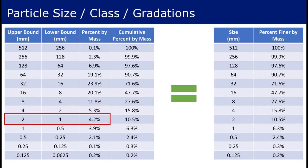So if a particular sample is 4.2 percent very coarse sand and the cumulative percentage of material in this class is 10.5 percent, then it can be said that 10.5 percent of this sample is fine or smaller than 2 millimeters.